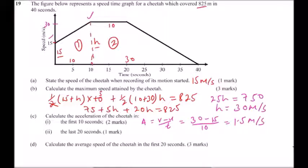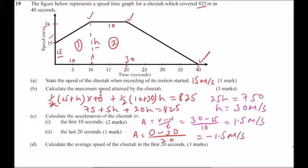Part c(ii): acceleration in the last 20 seconds. The final velocity is zero, the initial velocity is 30 meters per second, and the time taken is 20 seconds. So acceleration equals (0 minus 30) divided by 20, which gives minus 1.5 meters per second squared. The negative sign represents deceleration — the cheetah is reducing in speed.